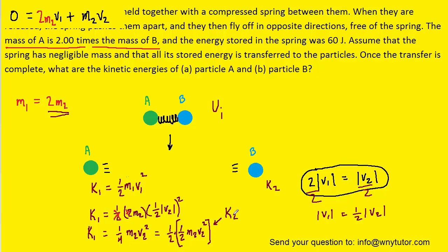In other words, that right there is k2. So we can actually rewrite this entire expression as just one-half times k2. And so now we see that k1 is simply half of k2.